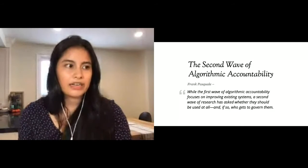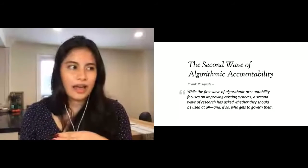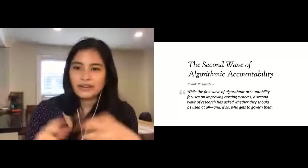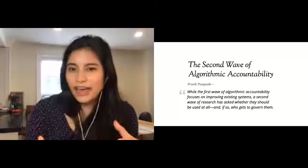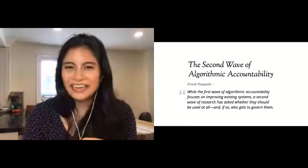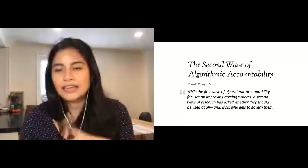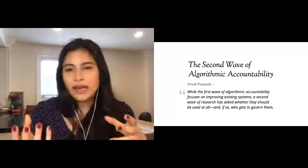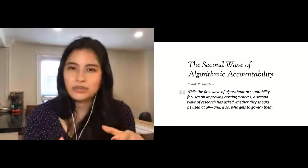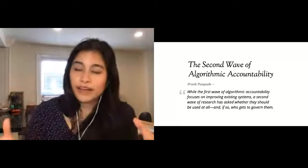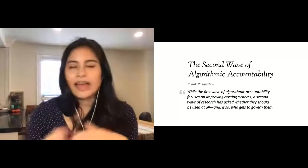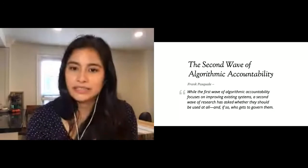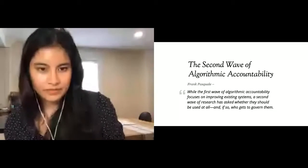I've heard this being called the second wave of algorithmic accountability. Here's a blog from Frank Pasquale. It really talks about that first wave focusing on improving the existing system or fixing the bias with math or just techno-solutionism, really. Whereas this next wave is saying: Why does this happen in the first place? Back to that first quote—just saying because AI thinks of itself as neutral, it really is amplifying some of the bigger problems. How can technology really shift power instead?